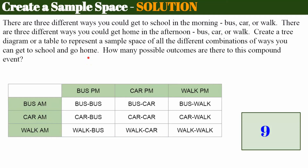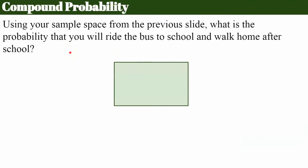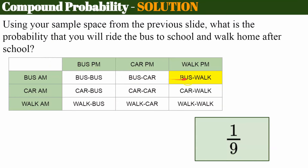Welcome back. So I created a table — you might have done a tree diagram. These are all the ways I could get to school in the morning and all the ways I could get home in the afternoon. Here are my nine outcomes: bus to school and bus home, bus to school and car home, bus to school and walk home — same combinations with car and with walking to school. So nine different outcomes. Now, using that sample space, find the probability that you will ride the bus to school and walk home. Riding the bus to school and walking home is only one of the nine outcomes, so the probability is one out of nine.